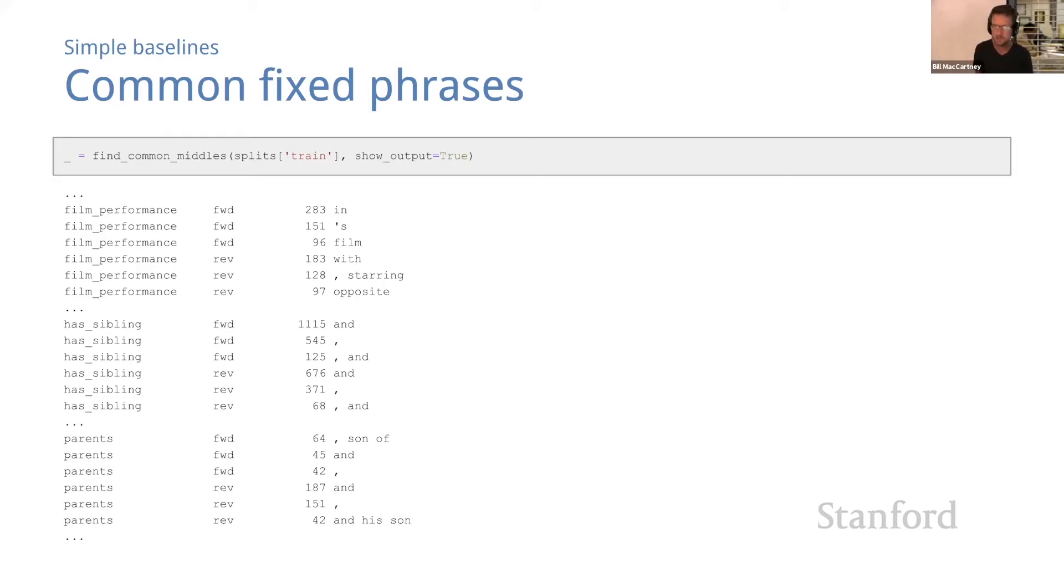Another observation is that punctuation and stop words like comma and 'and' are extremely common. Unlike some other NLP applications, it's probably a bad idea to throw these away—they carry lots of useful information. On the other hand, punctuation and stop words tend to be highly ambiguous. For example, if you look across the full range of all 16 relations, you'll see that a bare comma is a likely middle for almost every relation in at least one direction. So that comma does very often indicate a relation, but it's a really ambiguous indicator.